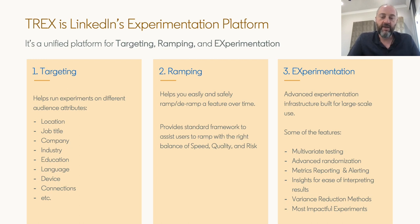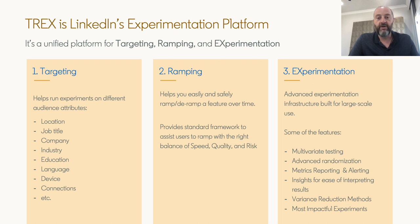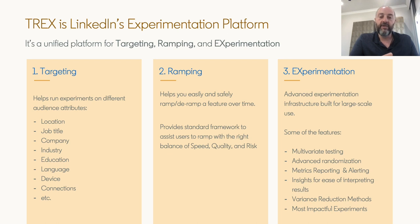The bigger piece is Experimentation — an advanced experimentation infrastructure platform that handles large-scale data. It has state-of-the-art features like multivariate testing, advanced randomization, reporting and alerting, and variance reduction techniques — even identifying the most impactful experiments from a metric owner's perspective. This platform plays a critical role as a checks-and-balances system at LinkedIn to ensure member safety and guardrails as we advance our growth.